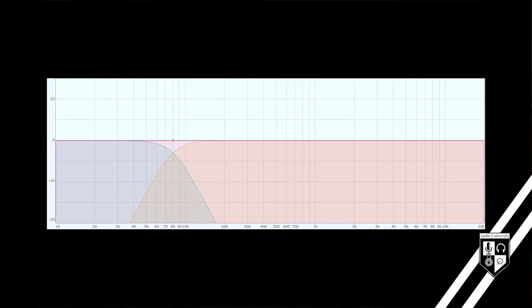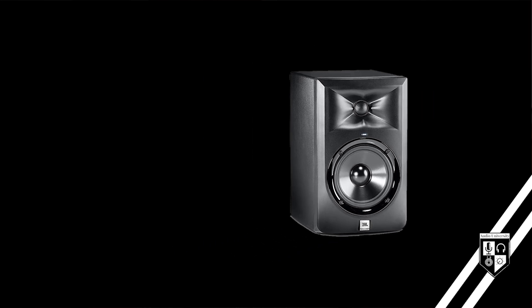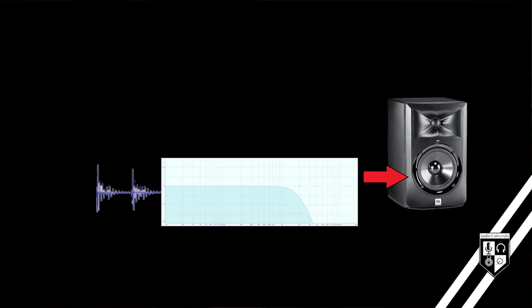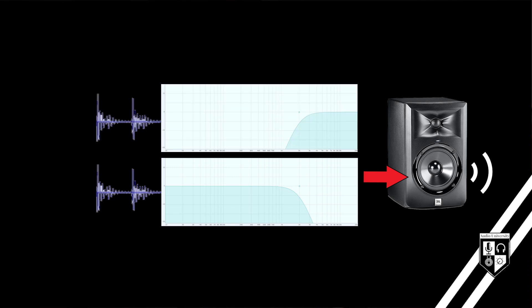You can think of a crossover as two audio pass filters used together. For example, to set the crossover between a woofer and a tweeter, you would put a low-pass filter on the woofer signal — allowing only low frequencies to pass — and a high-pass filter on the tweeter signal, allowing only high frequencies to pass. For more on audio pass filters, there's a linked article at AudioUniversityOnline.com.